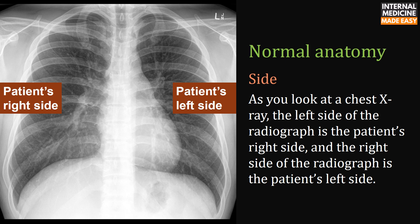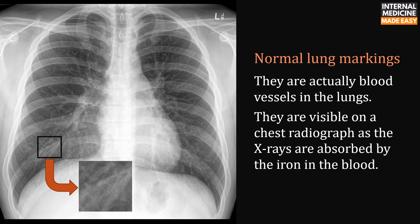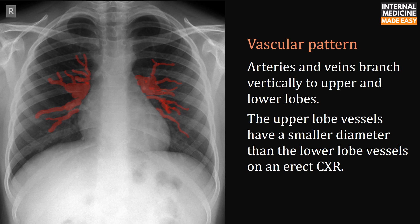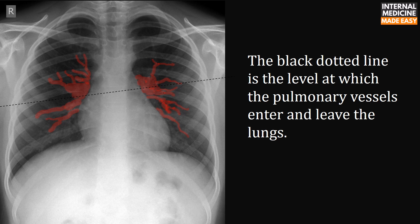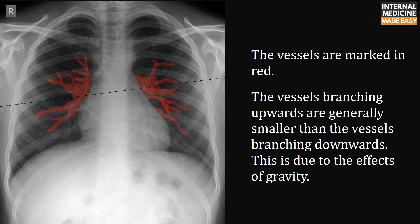As you look at a chest x-ray, the left side of the radiograph is the patient's right side, and the right side of the radiograph is the patient's left side. Normal lung markings are actually blood vessels in the lungs, visible on a chest radiograph as the x-rays are absorbed by the iron in the blood. Regarding vascular pattern: arteries and veins branch vertically to upper and lower lobes. The upper lobe vessels have a smaller diameter than the lower lobe vessels on an erect chest x-ray, due to the effects of gravity. The vessels branching upwards are generally smaller than those branching downwards.